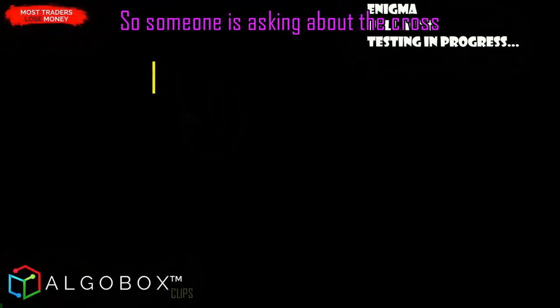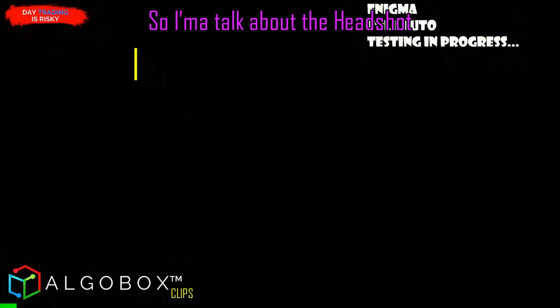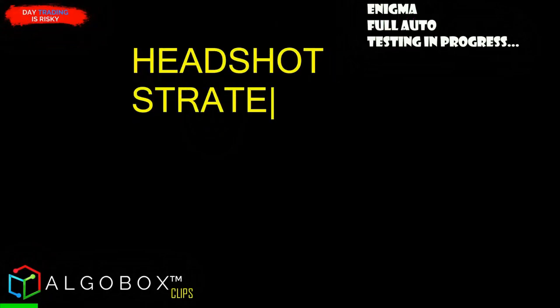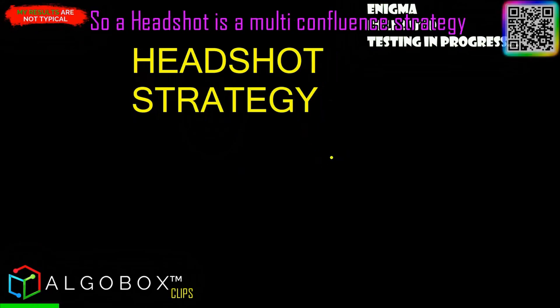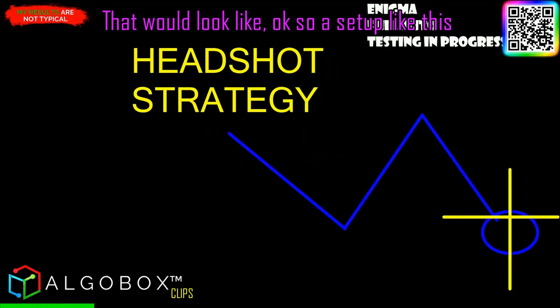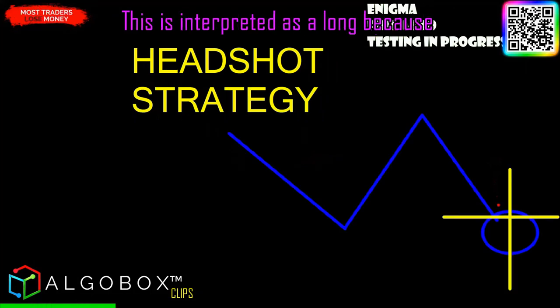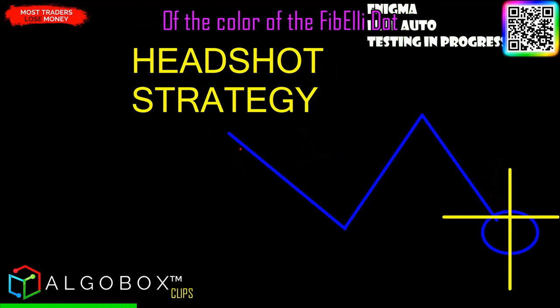I'll go box clips. Someone is asking about the cross, so I'm going to talk about the headshot just to use the example for this one. A headshot is a multi-confluence strategy that would look like a setup like this — this is interpreted as a long because of the color of the Fabella dot.